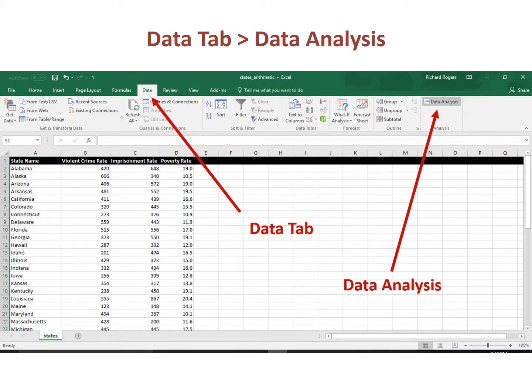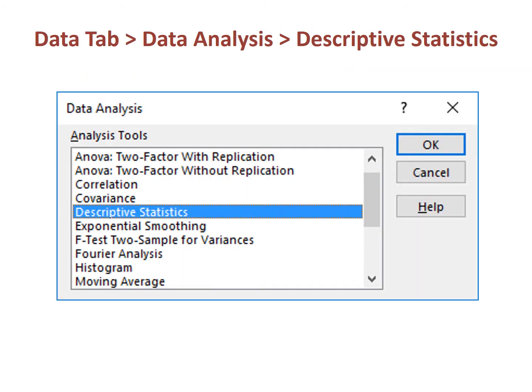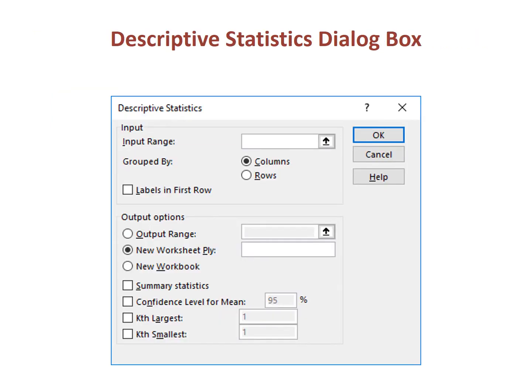In the Excel spreadsheet containing the data, go to the Data tab at the top, and then in the ribbon for the Data tab, go to the far right and click on Data Analysis. When you click on Data Analysis, you will get a dialog box listing the various procedures available in the Data Analysis tool pack. Move your cursor to Descriptive Statistics and click on it to get the dialog box for this group of statistics.